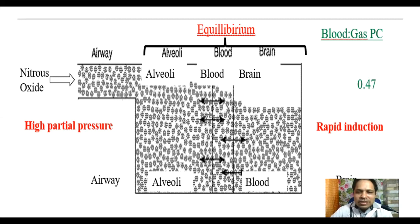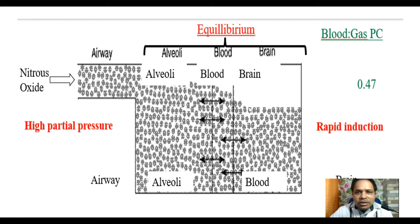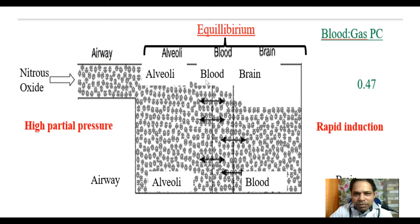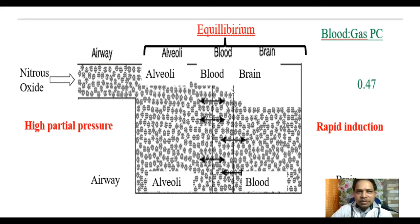Looking at the diagram: nitrous oxide is a gaseous inhalational anesthetic agent with low blood solubility and high partial pressure, given at a concentration of 70 to 80 percent — so potency is low. When you start administering this agent, it rapidly fills the alveoli, then the blood, and immediately the brain or CNS. So it takes very little time for induction. Nitrous oxide: low solubility, high partial pressure, rapid equilibrium between alveoli, blood and brain, and rapid induction.